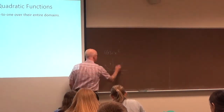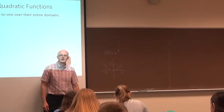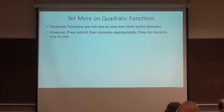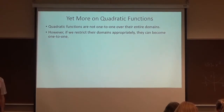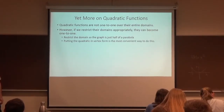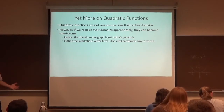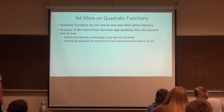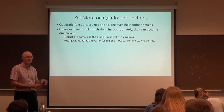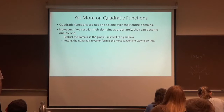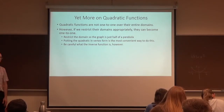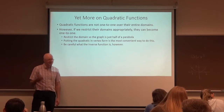That horizontal line at y equals four passes through the graph more than once. If that happens, the function fails the horizontal line test and is not one-to-one — two separate numbers get mapped to the same number, so it's two-to-one in a sense. But we can maybe restrict the domain — consider just half the parabola. If we restrict the domain appropriately it can become one-to-one. Putting the quadratic function's formula in vertex form is the most convenient way to do this.